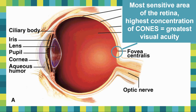The fovea centralis is located on your retina and it is the most sensitive area of the retina. It has the highest concentration of cones, meaning you have the greatest visual acuity — essentially the greatest accuracy of vision. This is what gives you the best ability to see. It's located at the very back and is full of tons and tons of cones.